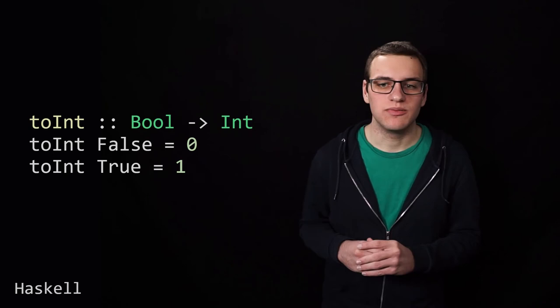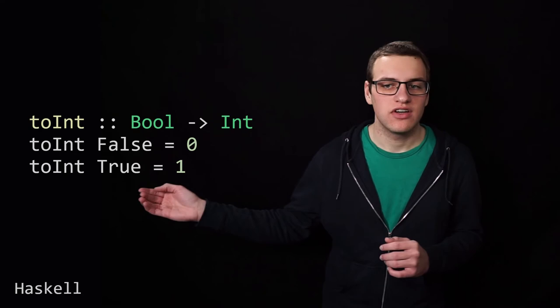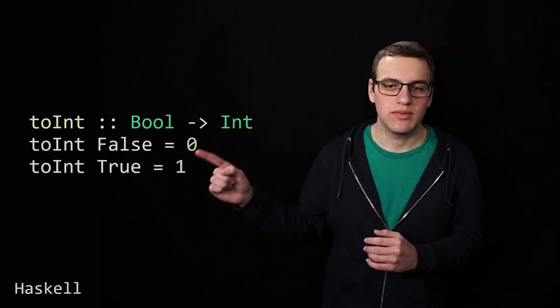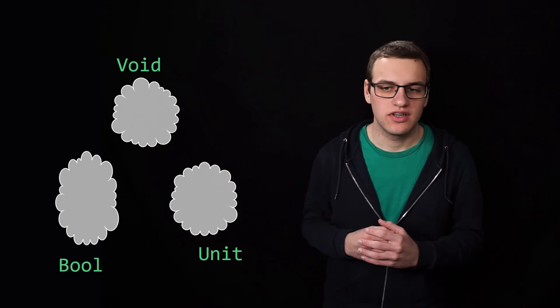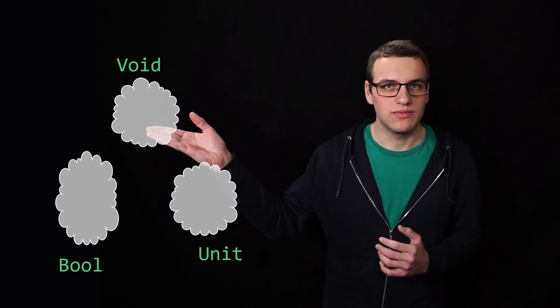A language that allows you to specify this mapping very clearly is Haskell, where you can define a function multiple times for different input values. So for example, the value to int can be specified like this with two implementations for when the value is false and for when the value is true. So knowing this, we can say something about all possible functions that you can specify in theory. Let's take a look at some examples using these three sets of values. So we have void, unit, and bool.